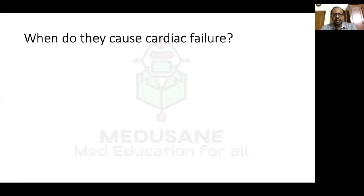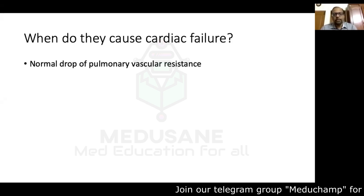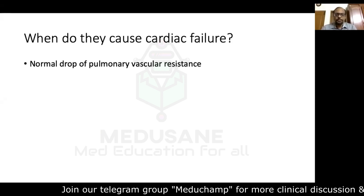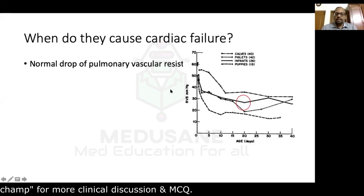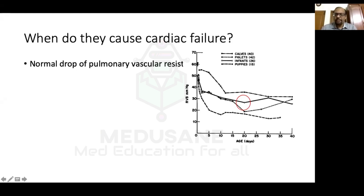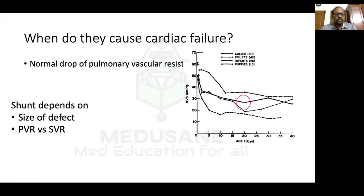With the exception of ASD, a large VSD, large PDA, AP window, or AV canal defect causes heart failure depending on the pulmonary vascular resistance drop. In the fetus and newborn, pulmonary vascular resistance is very high. With the first breath, PVR drops by 50%, then slowly drops to normal adult levels by two to three weeks. In large shunt lesions, the shunt depends on the size of the defect and PVR versus SVR — a large VSD produces a large shunt.